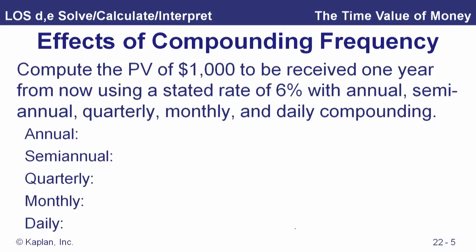Here's another example: compute the present value of $1,000 to be received one year from now using a stated rate of 6% with annual, semi-annual, quarterly, monthly, and daily compounding. With more frequent compounding, the effective discount rate over the year is higher, and we get smaller present values going back the other way.